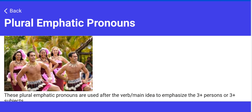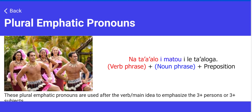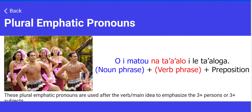Remember that you can combine a noun phrase type of sentence with action phrases that begin with tense markers. For example, instead of na ta'alo, imato, ili ta'alonga, you could begin with a noun phrase and say: o imato, na ta'alo, ili ta'alonga.